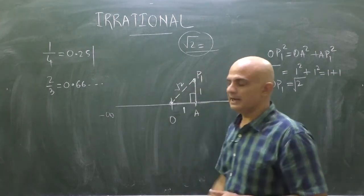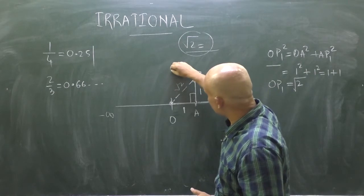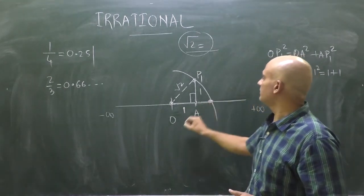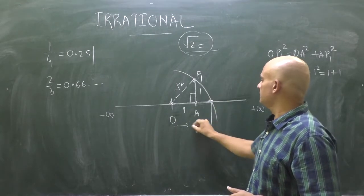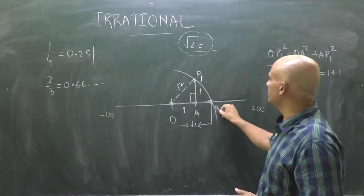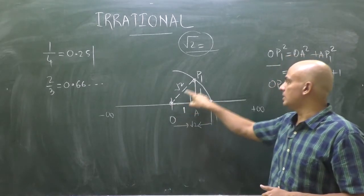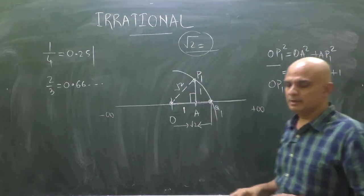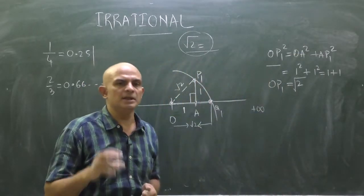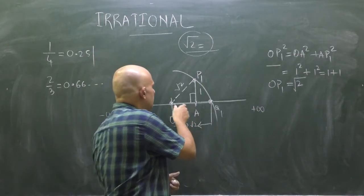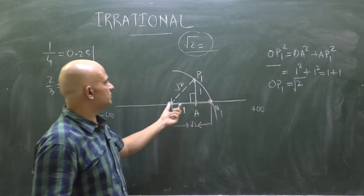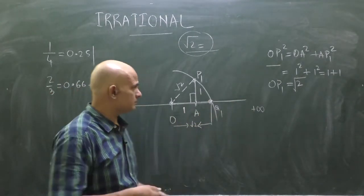Keep your rounder at these points and draw a circle. Your circle will cut the real line at some point, and this point from O is located at root 2 distance. Let this point be Q1. This is a proxy figure, but if you use proper measurement then you will find the exact position, and its value will be approximately 1.41.